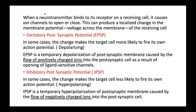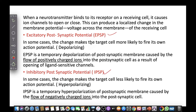EPSP stands for Excitatory Post-Synaptic Potential. When positively charged ions flow into the target cell, it causes depolarization, making the target cell more likely to fire its own action potential. EPSP is a temporary depolarization of the post-synaptic membrane caused by the flow of positively charged ions into the post-synaptic cell as a result of opening of ligand-sensitive channels.